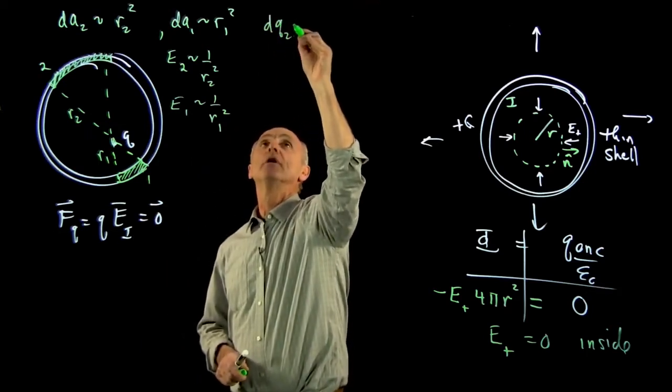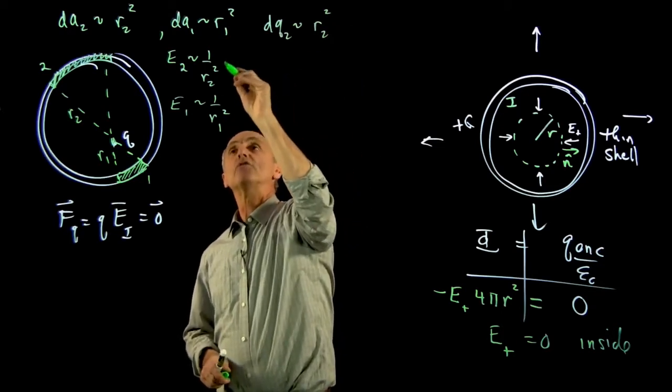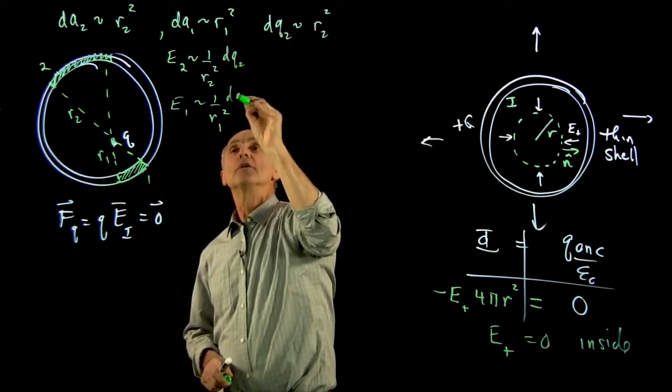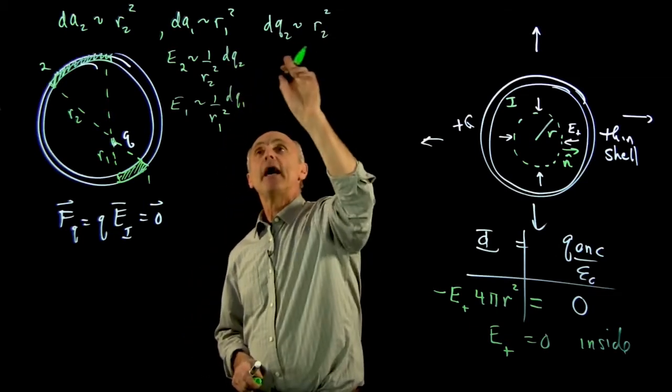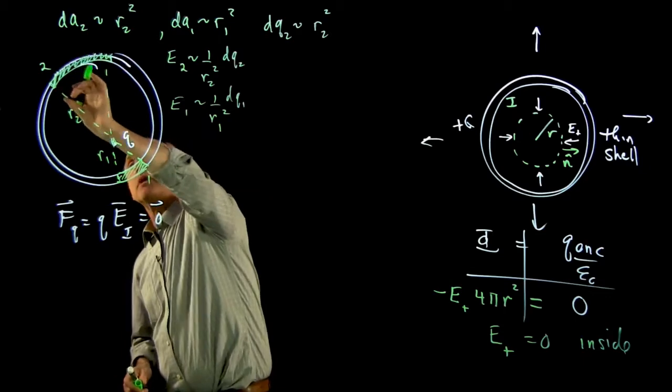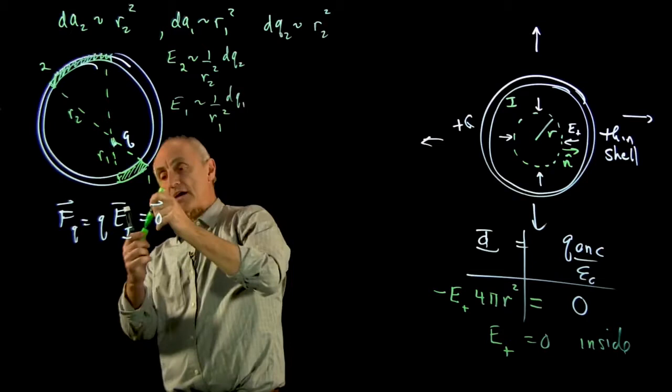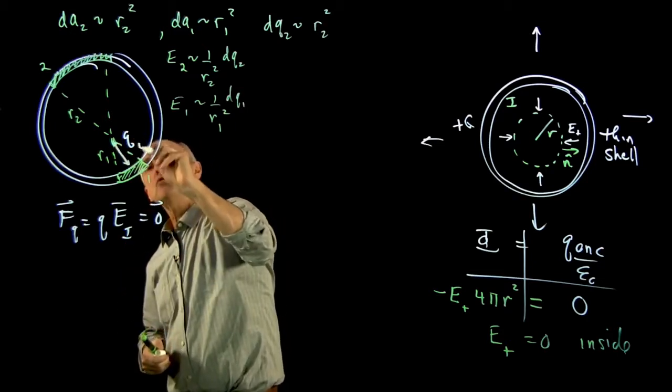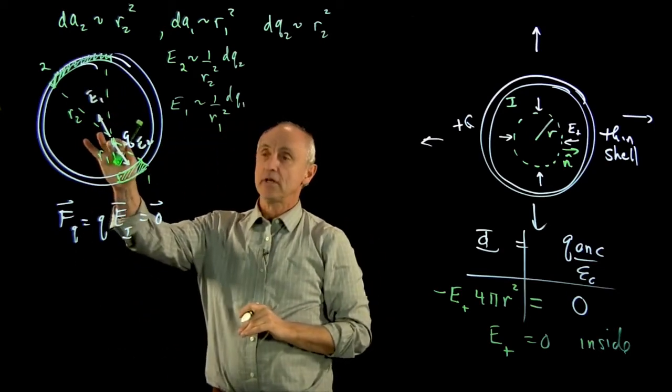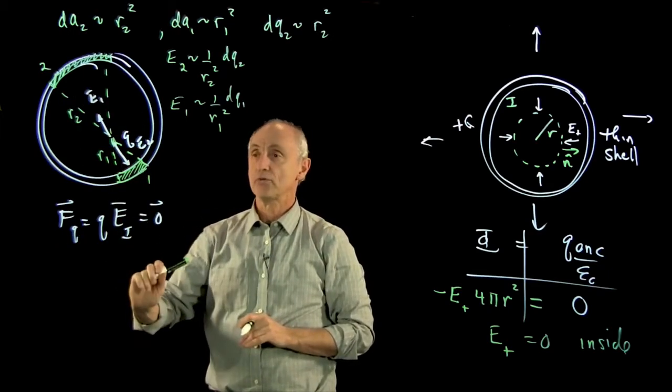But the electric field of 2 goes like 1 over r2 squared, and the electric field on 1 goes like 1 over r1 squared. And the total charge is proportional to the area, so dq2 is proportional to r2 squared. But the electric field is really the product of dq2 over times dq1. And you can see that the factors of r squared. This area is bigger by r squared, but the field falls off by 1 over r squared. And so these two effects, the effect of e2 and e1, exactly cancel. And that's why the field at some point in the center is 0 by this symmetry argument.